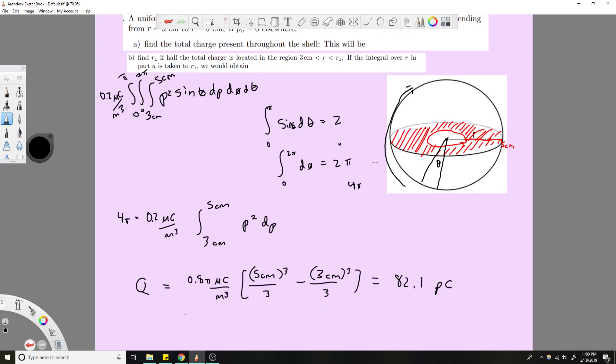So now part B: find r1 if half the total charge is located in the region from 3 centimeters to r1. First thing you notice is half the total charge is located from 3 centimeters to r1. So now instead of doing 3 centimeters to 5 centimeters, you're going 3 centimeters to some point r1. We don't know what that is, but we do know that it's equal to half the charge.